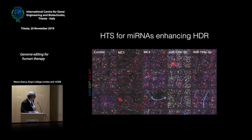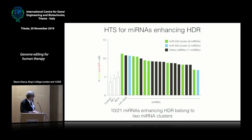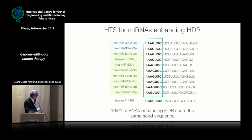Just to give you an idea — these are plates for high-content microscopy readings; you can see how many green cells appear with one of the active microRNAs compared to controls. Out of the 21 microRNAs that increase homologous directed repair, 11 of them belong to two clusters: the miR-520 cluster and the miR-302 cluster. Interestingly, all these microRNAs have exactly the same seed sequence: A-A-G-U-G-C. This means that by this screening we have intercepted a common pathway.